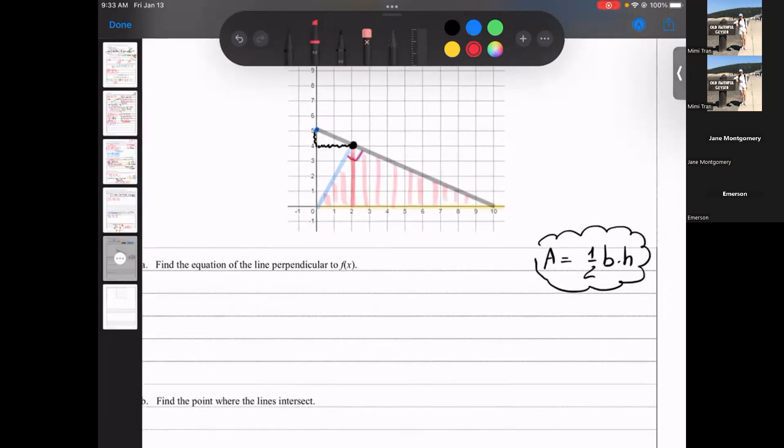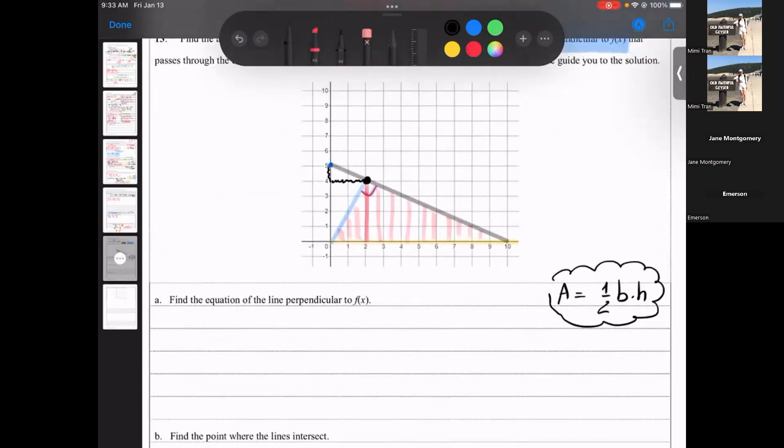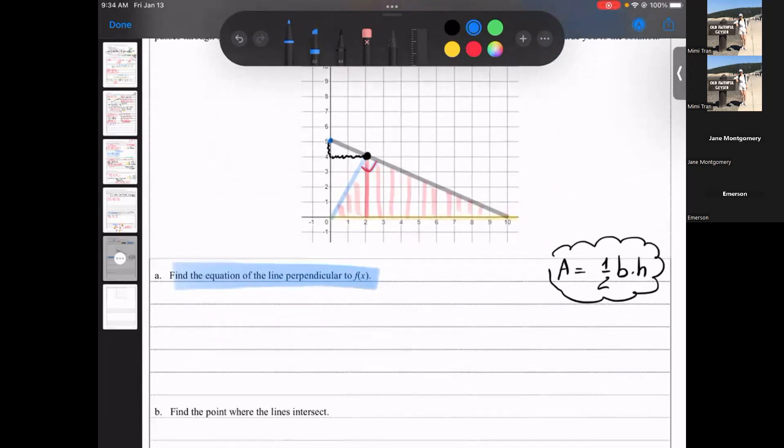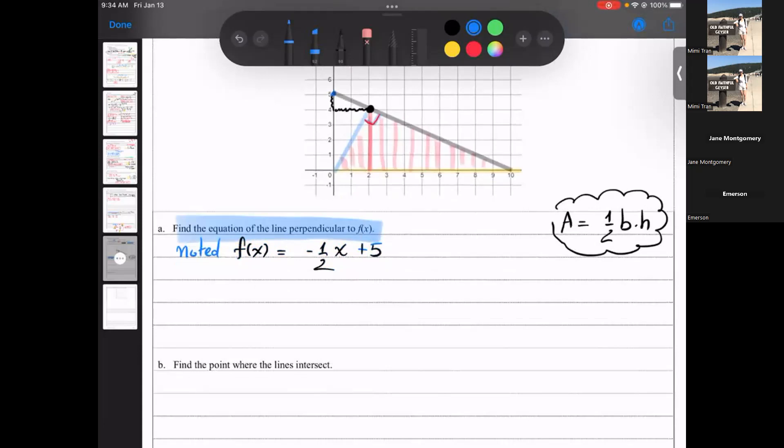Let's do part a first. I want to find the equation that, the equation of a line that's perpendicular to f of x, the blue line. Notice f of x equal negative one half x plus five. If the line, if the equation of a line that we're looking for is perpendicular to that black line, then the slope has to be what? Two, very good. So the slope is equal to opposite reciprocal.